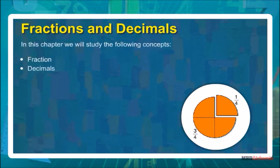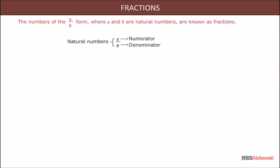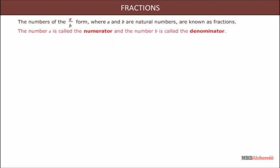In this chapter, we will study the following concepts: Fraction and Decimals. Fractions — numbers of the A upon B form, where A and B are natural numbers, are known as fractions. The number A is called the numerator and the number B is called the denominator. Thus, 1/2, 3/4, 5/3, 32/5, etc. are all fractions.